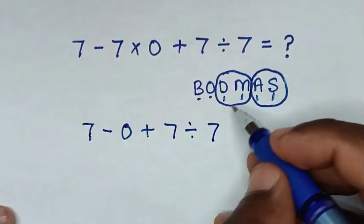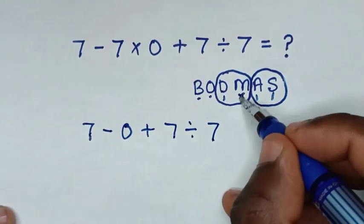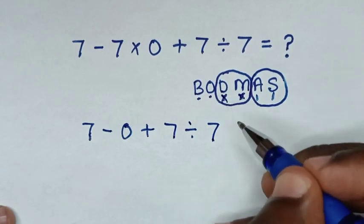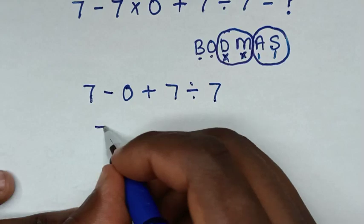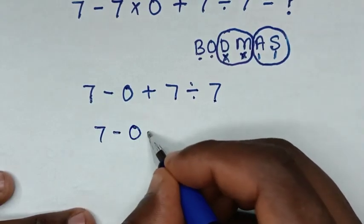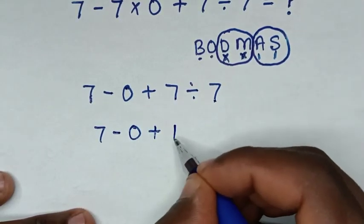After dealing with multiplication, we deal with division of 7 ÷ 7. So it will be 7 - 0 + 1, because 7 ÷ 7 = 1.